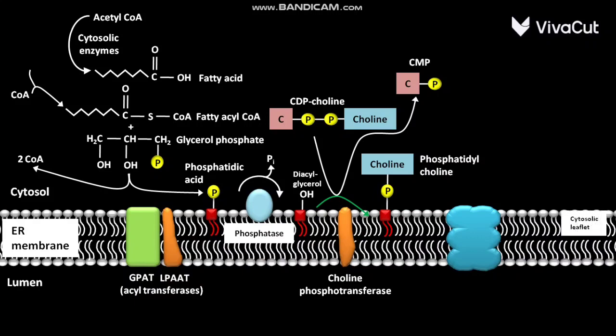The phosphatidylcholine is formed in the cytosolic leaflet of smooth ER membrane. The smooth ER membrane has another associated enzyme called flippase. The flippase catalyzes the movement of phosphatidylcholine to the exoplasmic leaflet of smooth ER membrane.